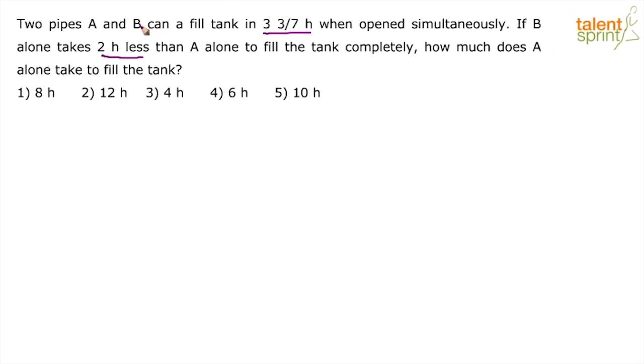Pipe A takes A hours and B takes B hours. From the first statement, which says A and B together can fill a tank in 3 3/7 hours, we can see that AB by A plus B is equal to 3 3/7. Let us simplify this mixed fraction further: 21 plus 3 is 24 by 7. So when A and B are working together, they take 24 by 7 hours.